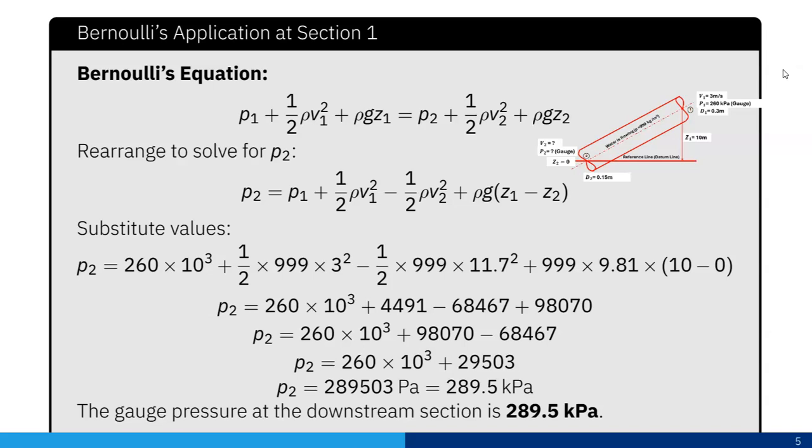Now substituting all the values: 260 times 10 to the power 3 plus half times 999 times 3 squared minus half times 999 times 11.7 squared plus 999 times 9.81 times 10 minus 0. If I do the calculation,